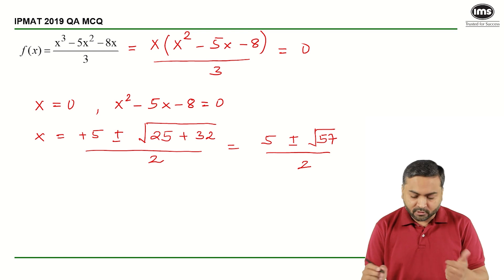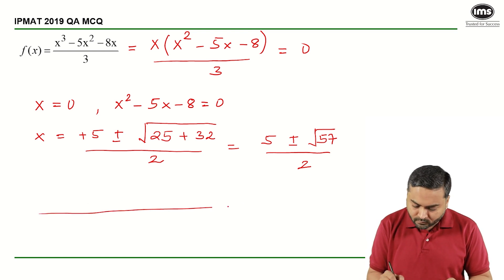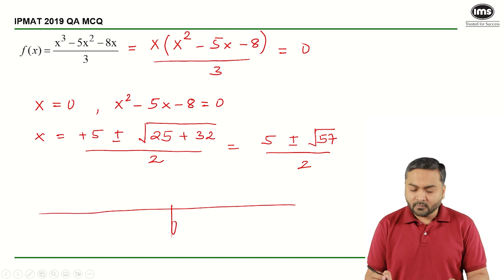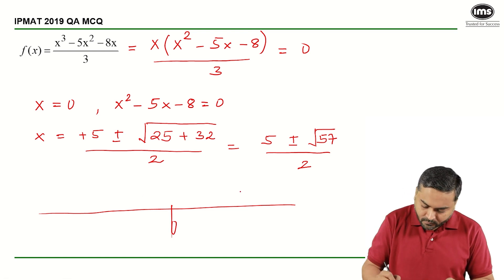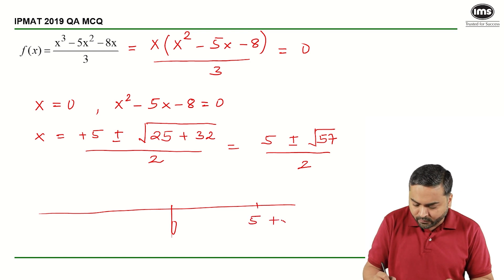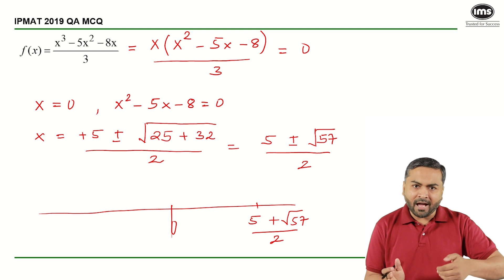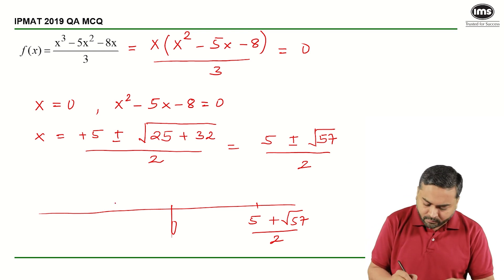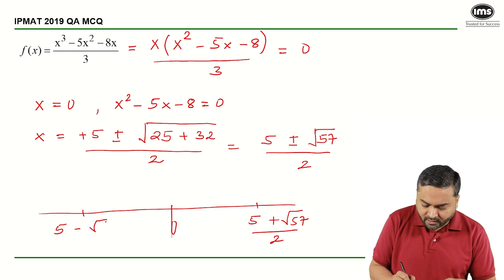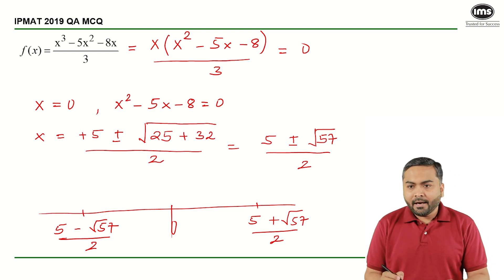So I have 3 roots with me: x is equal to 0, then I have 5 plus root 57 by 2, that is a positive value, and 5 minus root 57—minus root 57 will be higher in magnitude as compared to 5, so it turns out to be negative. So it will be 5 minus root 57 by 2.